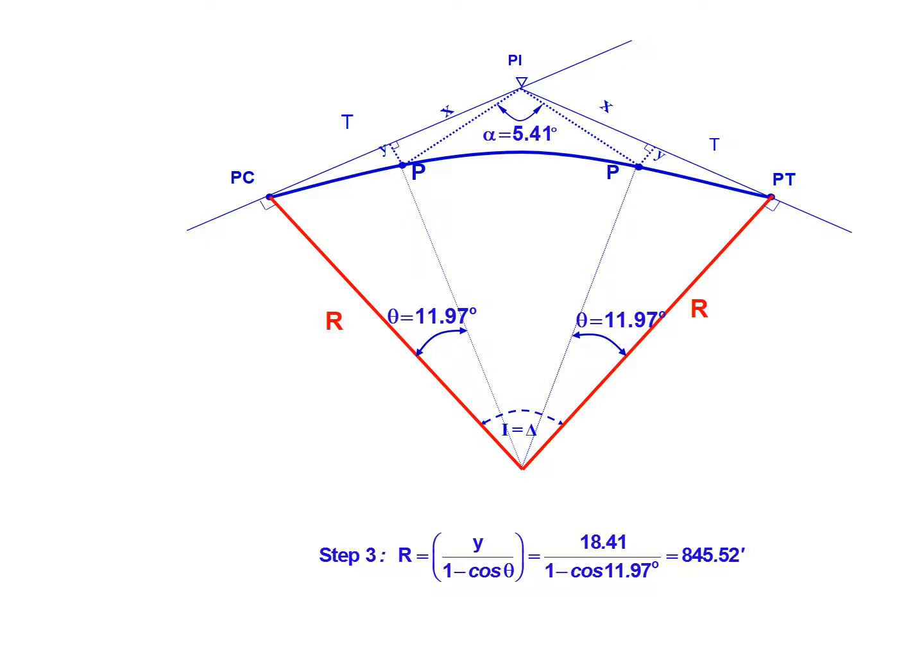The final thing we're solving for in this problem is the radius. The radius equals y divided by 1 minus cosine of theta. Simplifying, that's 18.41 divided by 1 minus the cosine of 11.97 degrees, which will give us a radius of 845.52 feet. This can be used in further calculations if other points of interest are needed for a horizontal curve.